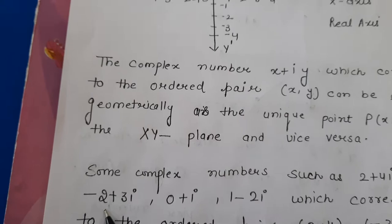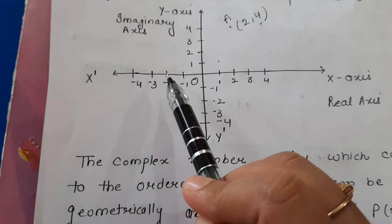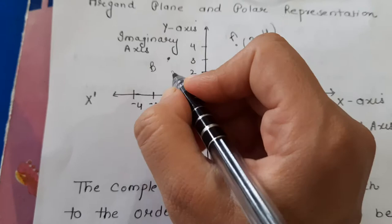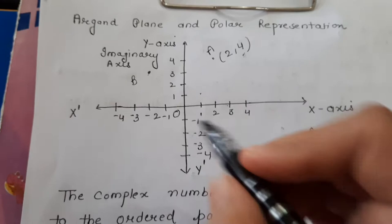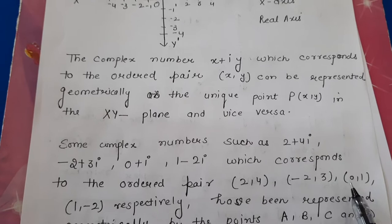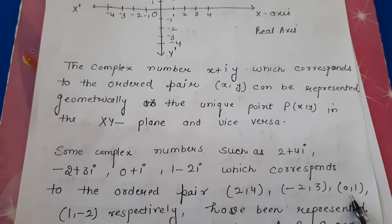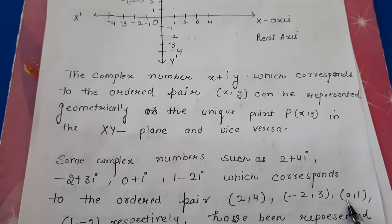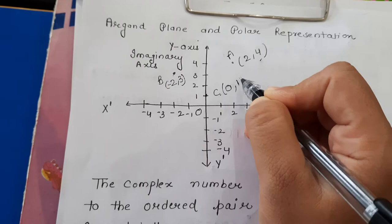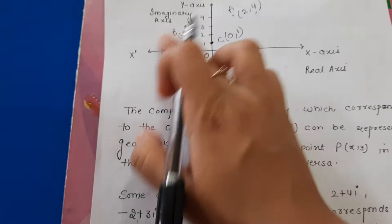For the complex number -2 plus 3 iota, the real part is -2 and the imaginary part is 3. On the real axis we go to -2 and on the imaginary axis to 3, giving the ordered pair (-2, 3) — let it be point B. Similarly, the ordered pair (0, 1) has real part zero and imaginary part one, so this point C has coordinates (0, 1) on the imaginary axis.